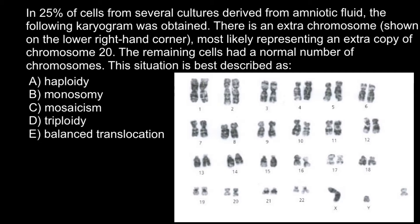Haploidy means only one set of chromosomes. What does monosomy mean? As you see, the first answer has 'ploidy' as an ending, and here we have 'somy' as an ending — 'som' as in chromosome. So 'mono' means one, and monosomy means the situation when one of the pairs of chromosomes is represented by only one chromosome. Say chromosome 21 or 22 can be represented by only one chromosome — one chromosome can be missing. We call such a situation monosomy.